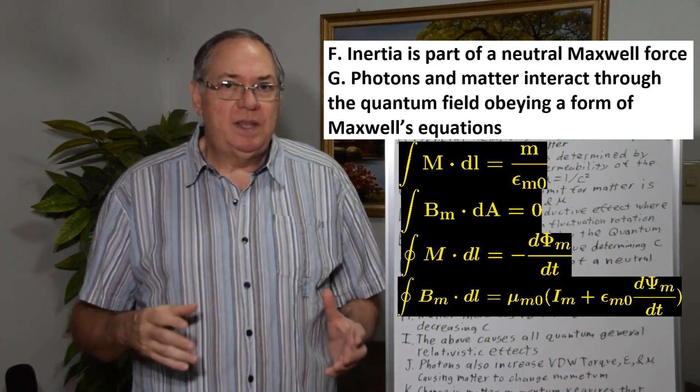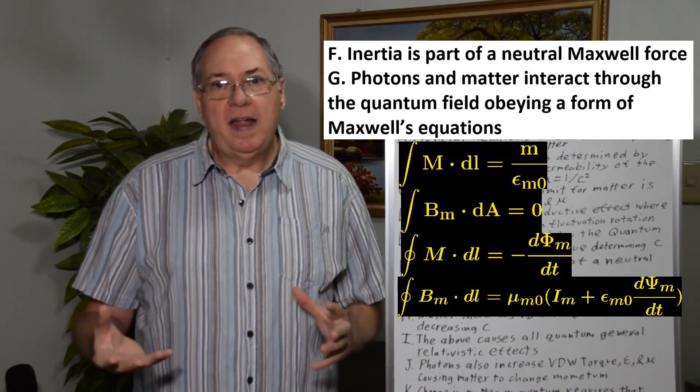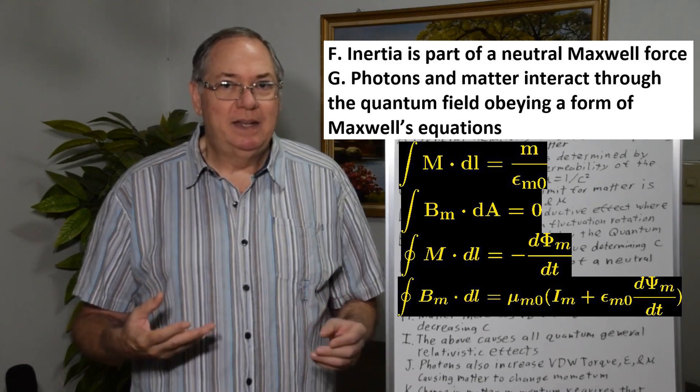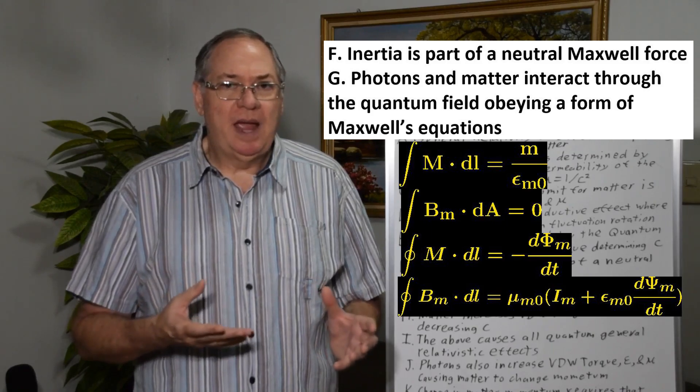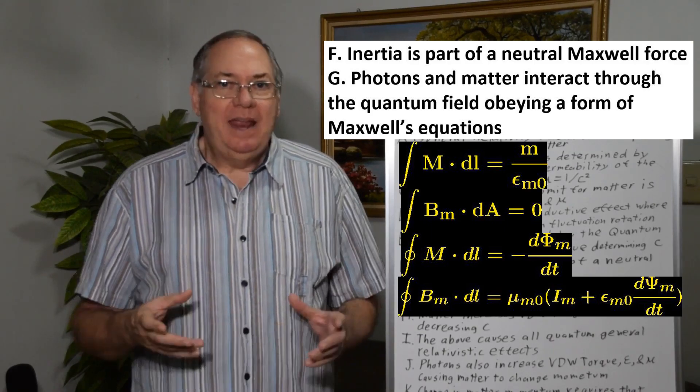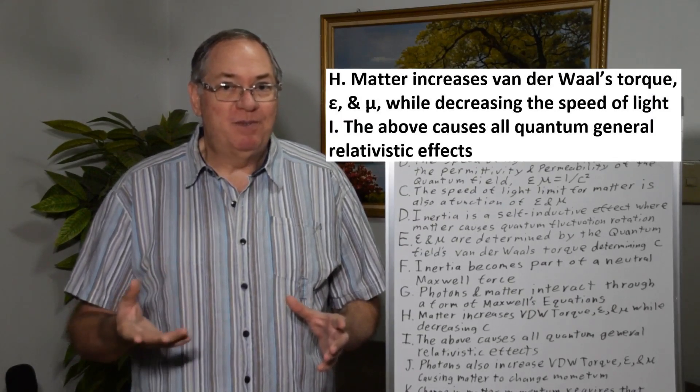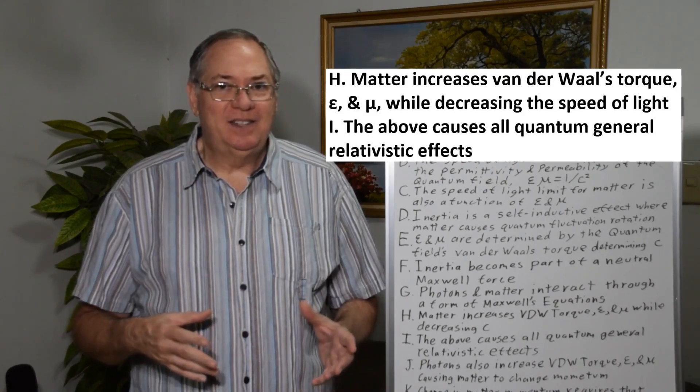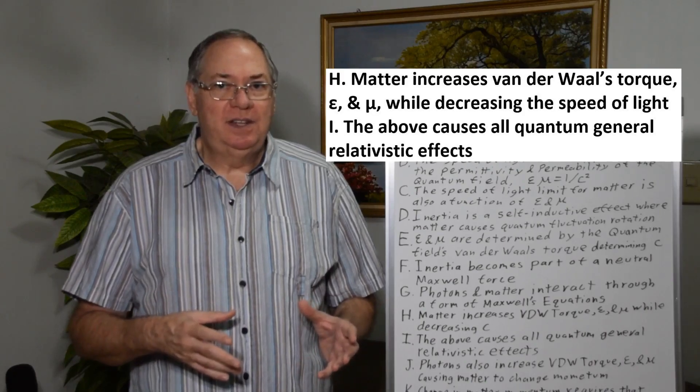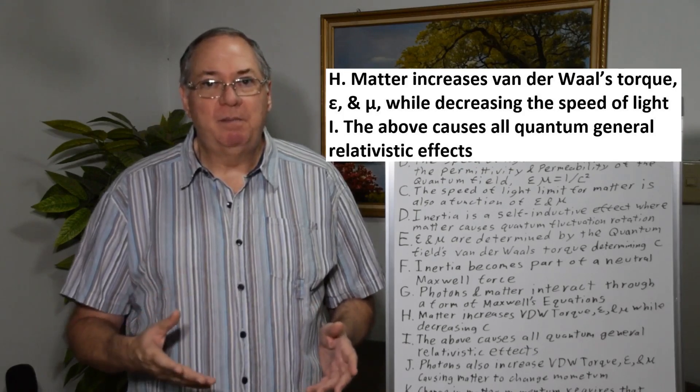And so what this means is that matter and photons are interacting in a Maxwellian way that behaves very similar to how we think about electromagnetic interactions occurring. So we can look at it, and this idea goes back to Newton and then Einstein last century, that matter changes the dielectric constant of space, or in particular, the permittivity and permeability of space.